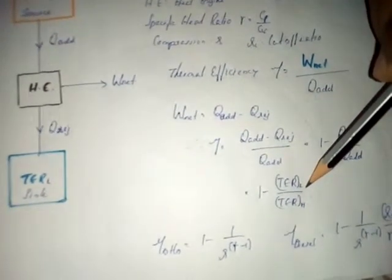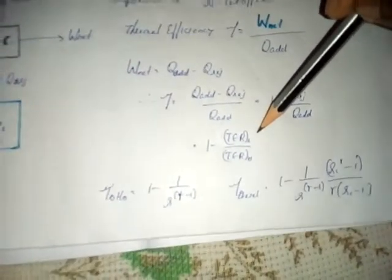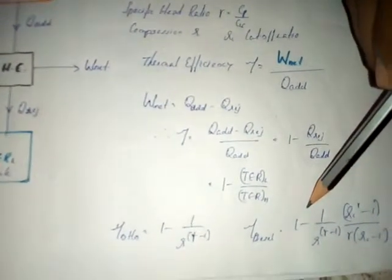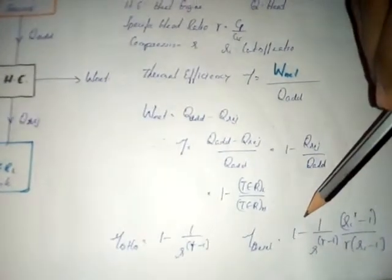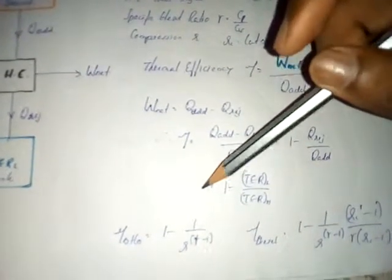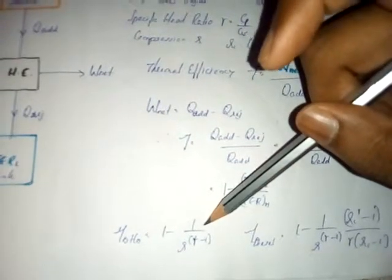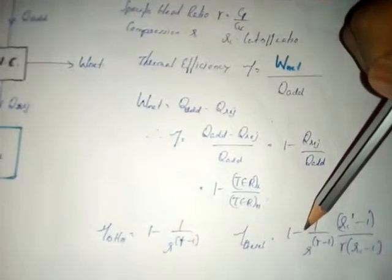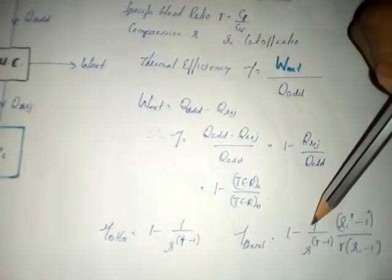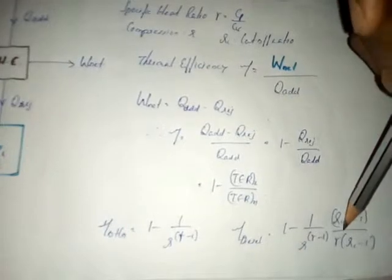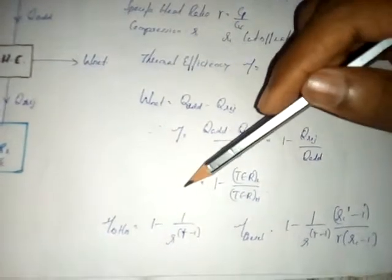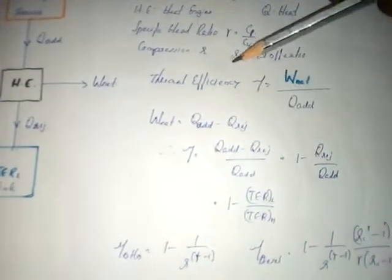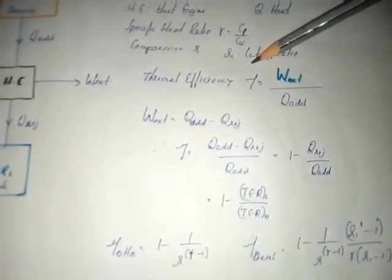Automobile engineers are familiar with two cycles: the Otto cycle and the Diesel cycle. The Otto cycle explains the petrol engine, and the Diesel cycle explains the compression ignition (diesel) engine. The theoretical thermal efficiency of the Otto cycle is: 1 − (1 / r^(γ−1)). For the Diesel cycle it is: 1 − (1 / r^(γ−1)) × ((rc^γ − 1) / (γ × (rc − 1))), where γ is the specific heat ratio (cp/cv), r is the compression ratio, and rc is the cutoff ratio.